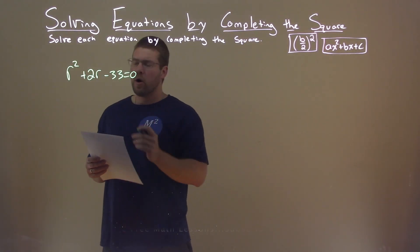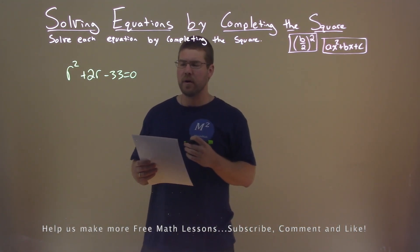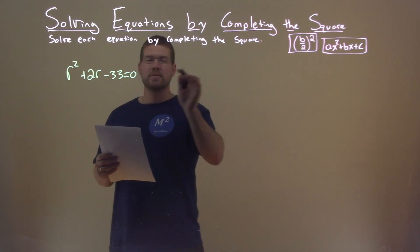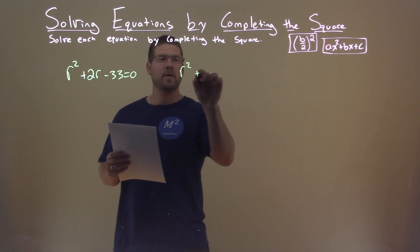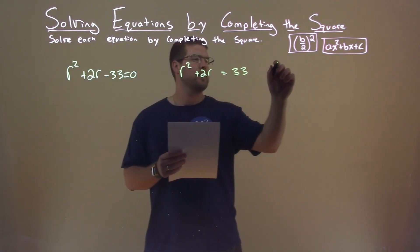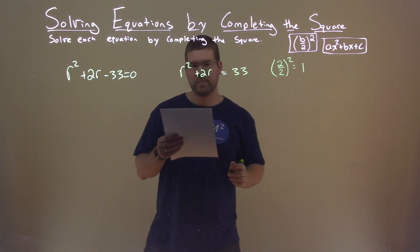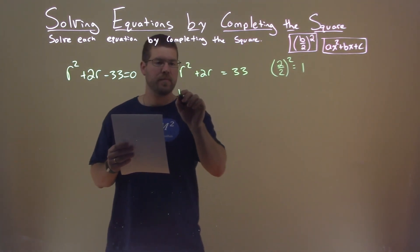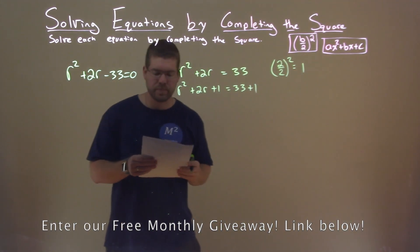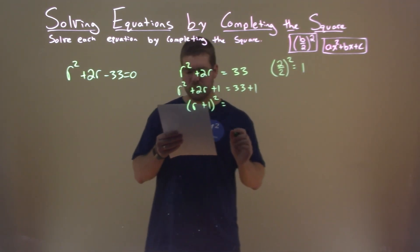We're given this problem right here: R squared plus 2R minus 33 equals 0, and we need to solve this by completing the square. First thing I'm going to do is add a 33 to both sides, so we have R squared plus 2R equals a positive 33. I'm looking at my B value — that's 2. Divide that by 2, square it, and we get 1. So now I'm going to add 1 to both sides: R squared plus 2R plus 1 equals 33 plus 1. The left-hand side is a perfect square: R plus 1, all squared, equals 34.